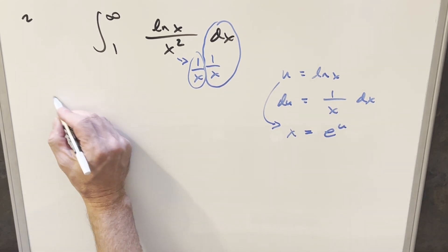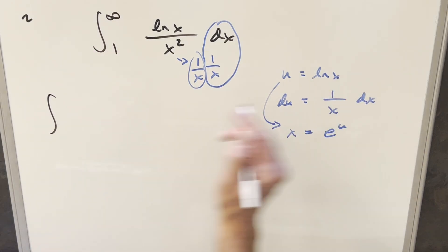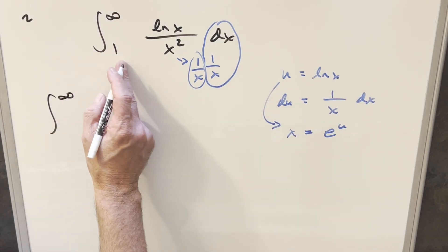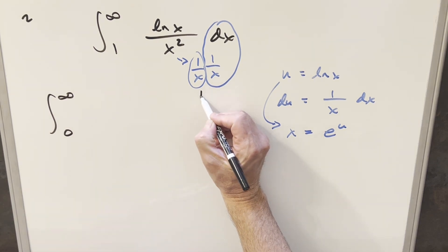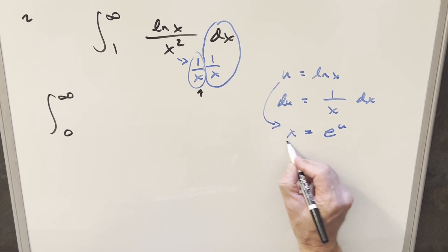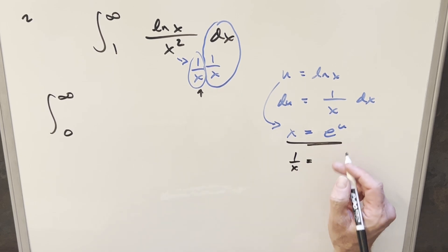So substituting for this first: at infinity, natural log of infinity is still infinity. Plug in 1, natural log of 1 is just 0. Then for this value right here, the 1 over x that we didn't use here, 1 over x is just the reciprocal, so 1 over x is the same thing as e to the minus u.